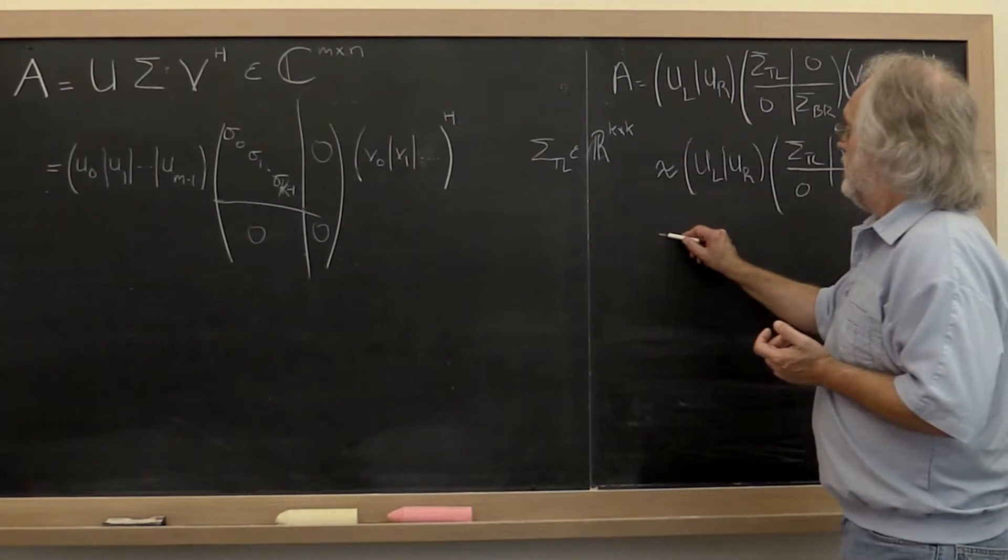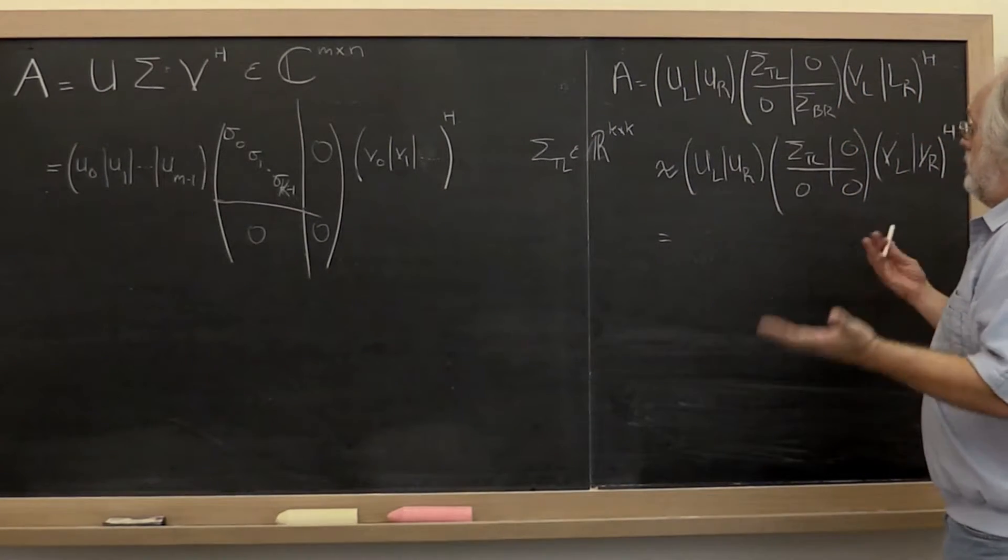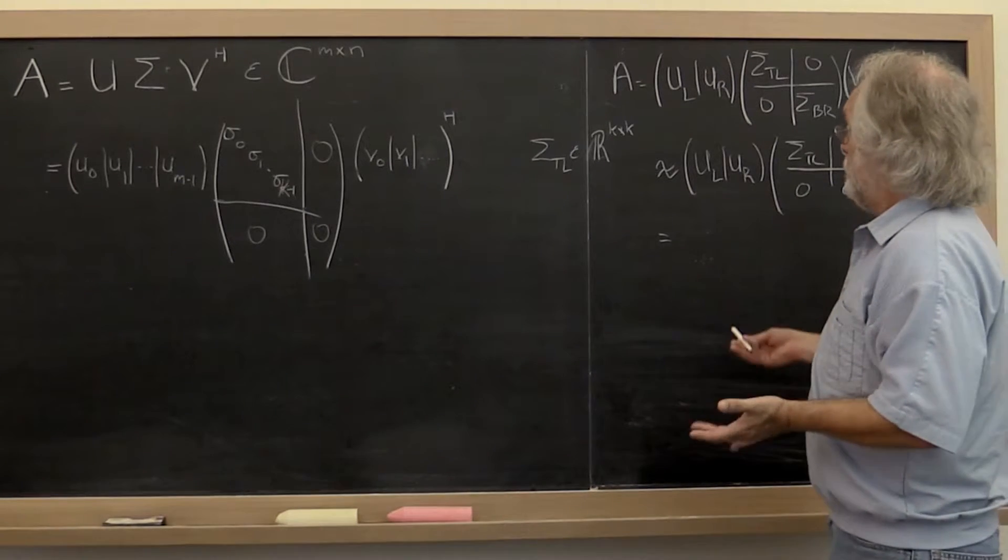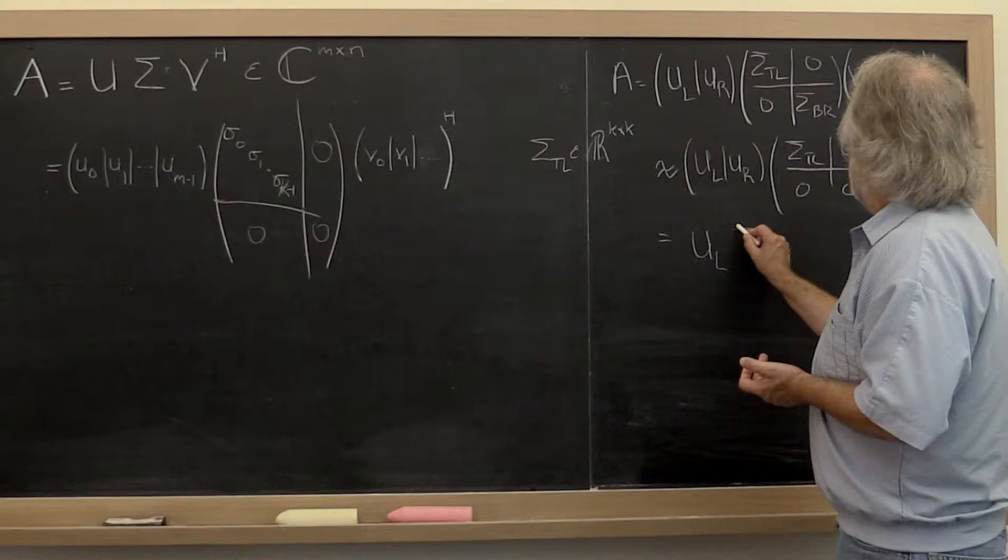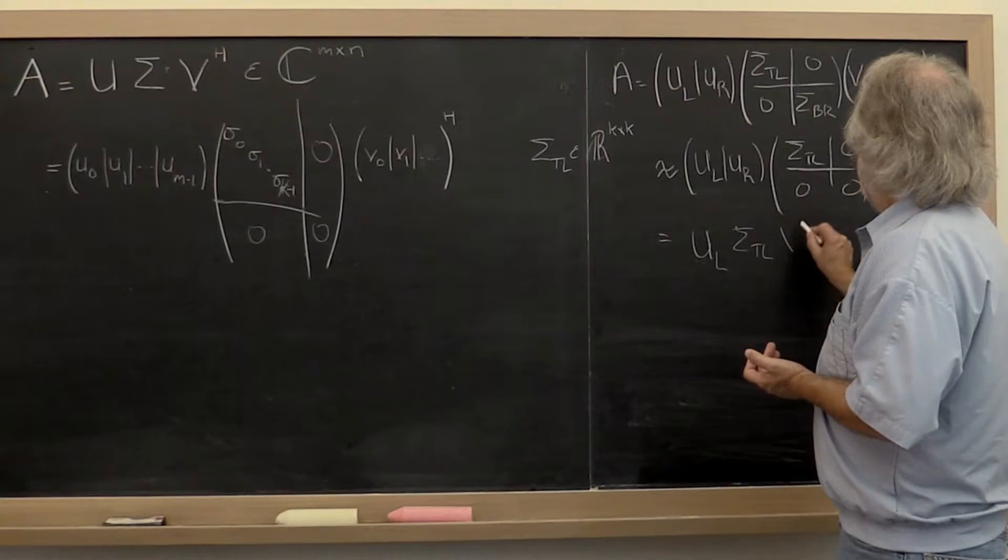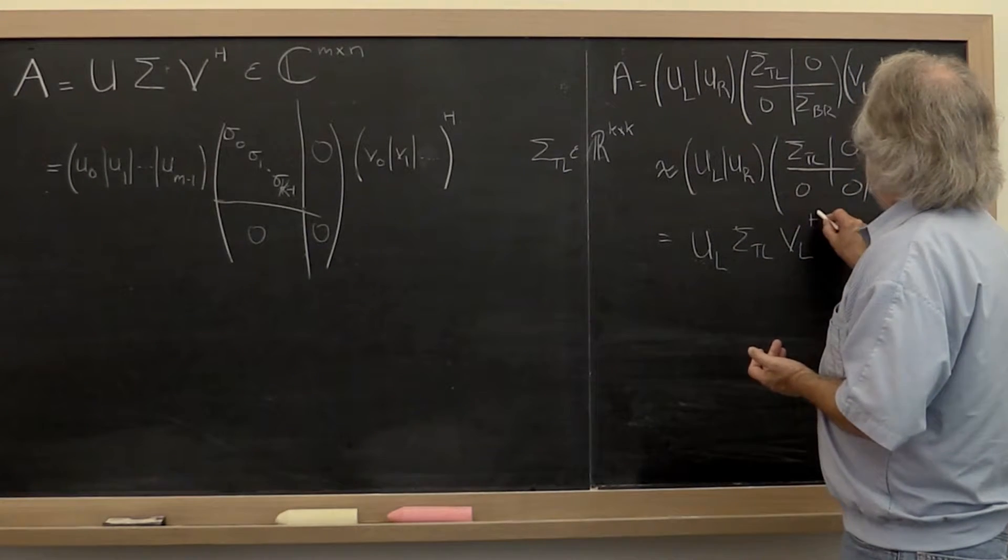...which then gives us an approximate reduced singular value decomposition: U left, sigma top left, V left, Hermitian transpose.